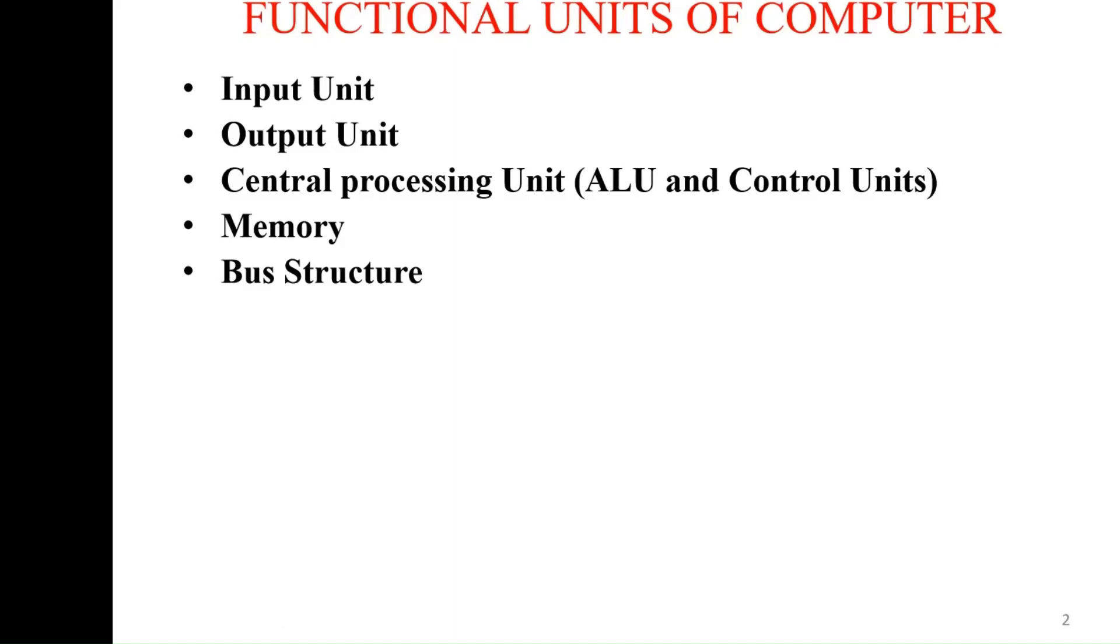Components of your computer are input unit, output unit, and central processing unit, which is the brain of the computer and consists of ALU and other control units.